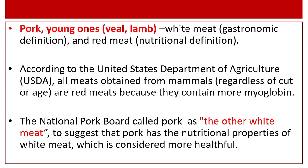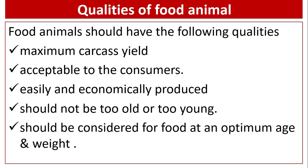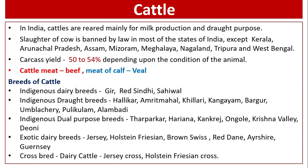The National Pork Board called pork the 'other white meat' to suggest that pork has the nutritional properties of white meat, which is considered more healthful. Qualities of food animals: food animals should have maximum carcass yield, be acceptable to consumers, be easily and economically produced, should not be too old or too young, and should be considered for food at an optimum age and weight.